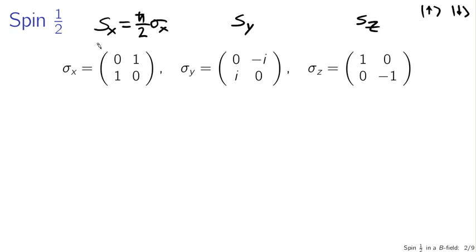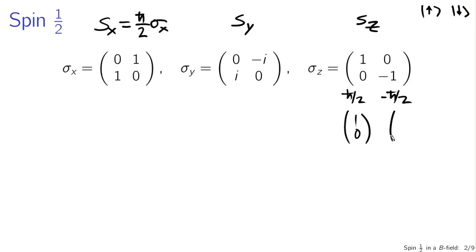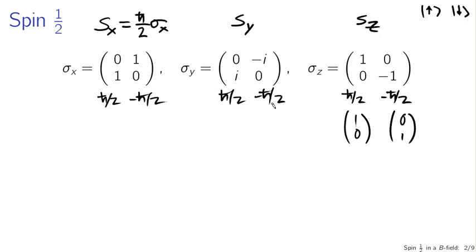We know the eigenstates of the S sub z operator. Since we're using those as our basis, we will have very simple expressions for the eigenvectors associated with the S sub z matrix operator. The eigenvalues are h-bar over 2 and minus h-bar over 2, and the associated eigenvectors are (1, 0) and (0, 1). The eigenvalue structure for x and y angular momentum is the same — h-bar over 2 and minus h-bar over 2 — but the eigenvectors are slightly more complicated.